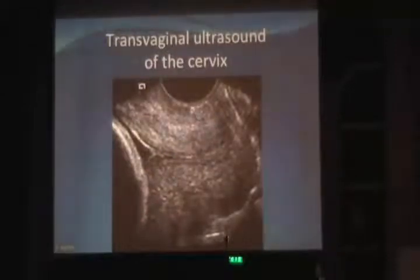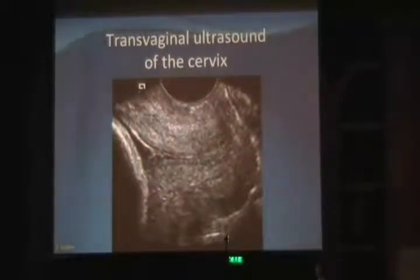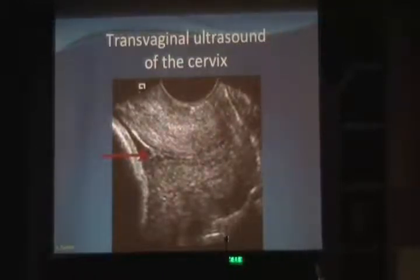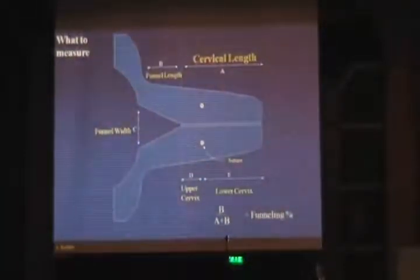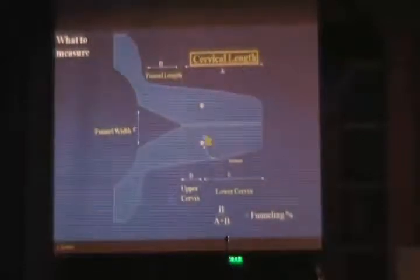Transvaginal ultrasound of the cervix is the most predictive test for preterm work, because when the cervix is going to open, it begins to open at the internal os — and that is something you cannot detect on manual examination. Cervical length, or the closed part of the cervix, is what you want to measure, even if there is a little opening at the internal os. Cervical length is the distance from the external os to the end of the closed part of the endocervical mucosa.